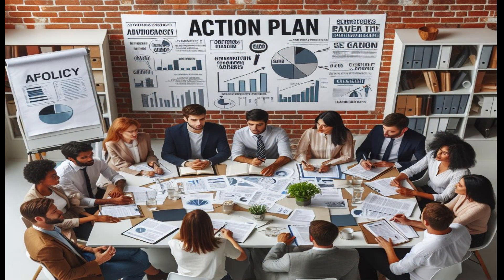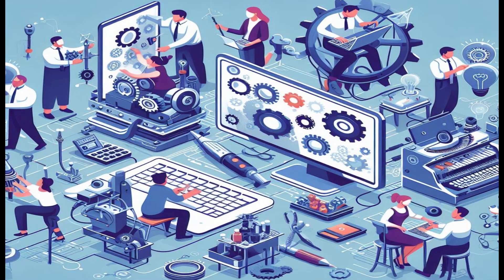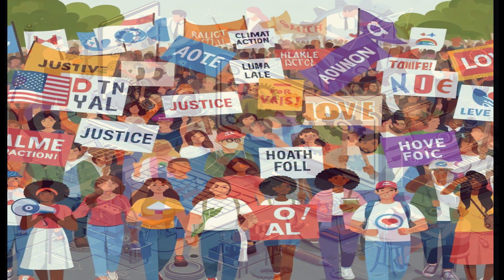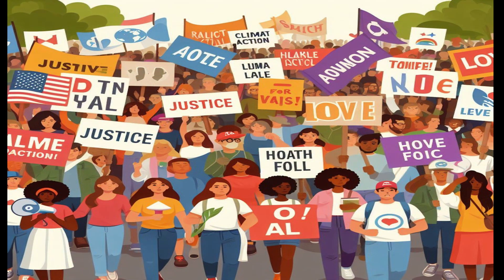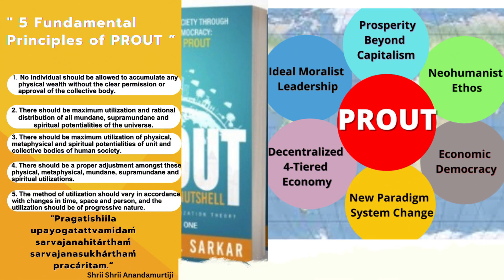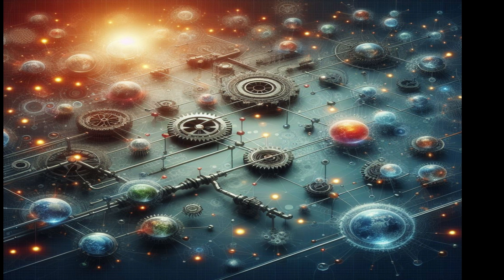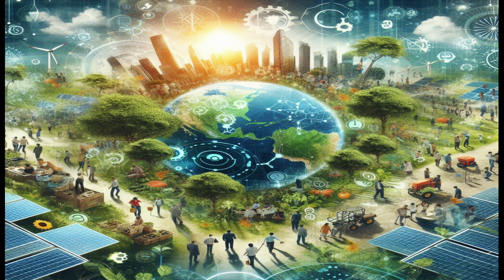Policy advocacy and reform: advocating for policy reforms that align with PROUT's principles at local, national, and international levels can create enabling environments for its implementation. Innovation and adaptation: continuously innovating and adapting PROUT's principles to local contexts and evolving challenges can enhance its relevance and practicality. Leadership and grassroots movements: leadership from visionary individuals and grassroots movements advocating for socioeconomic change can catalyze broader societal shifts towards alternative models like PROUT. Ultimately, establishing PROUT requires a combination of grassroots mobilization, political will, international cooperation, and visionary leadership to navigate the complexities of transitioning away from capitalism towards a more equitable and sustainable future.